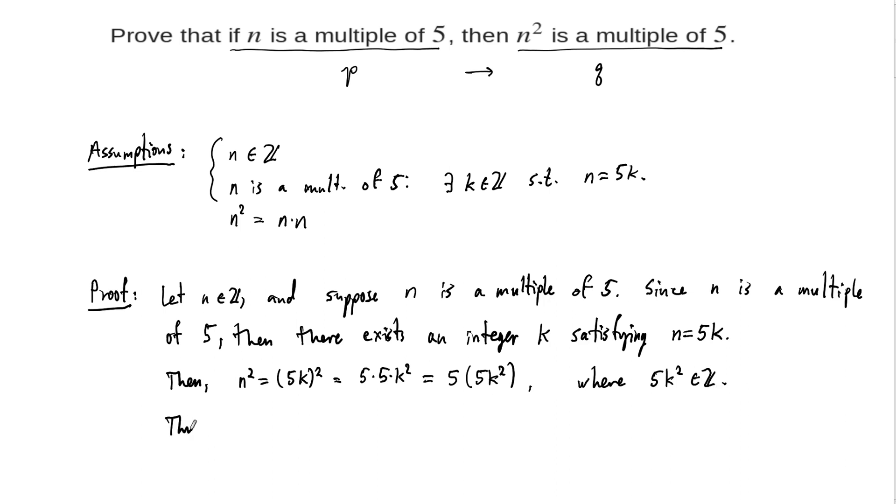we can say thus, n squared is equal to 5 times, let's say, m for some integer m. But we know exactly what m is, right? It doesn't matter, because our goal is just to show that n squared is a multiple of 5, and we've done that, right?